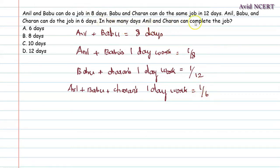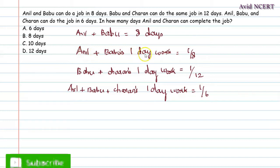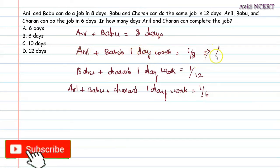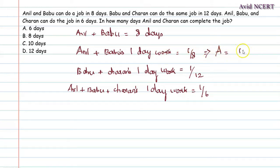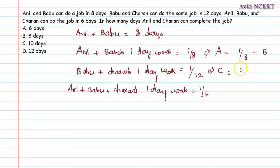In how many days can Anil and Charan complete the job? From the first sentence, Anil's 1-day work: A equals 1/8 minus B. From the second sentence, B plus C equals 1/12, therefore Charan's work C equals 1/12 minus B.